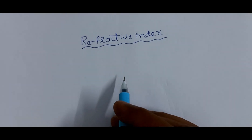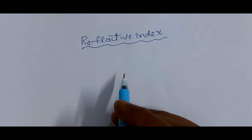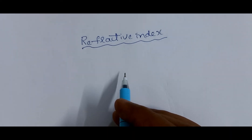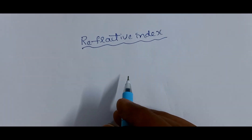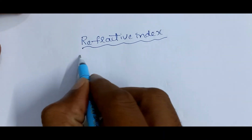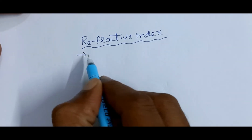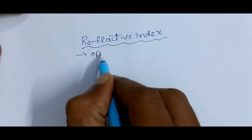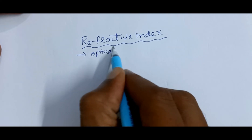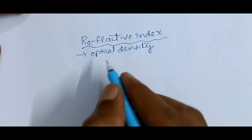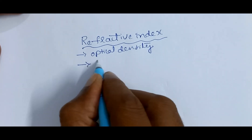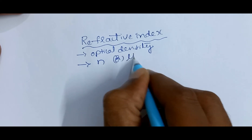Refractive index topic in Ray optics, 12th class physics, and also 10th class refraction of light at plane surfaces. So what is a refractive index? Refractive index is also called optical density, and it is denoted by the letter N or Mu.